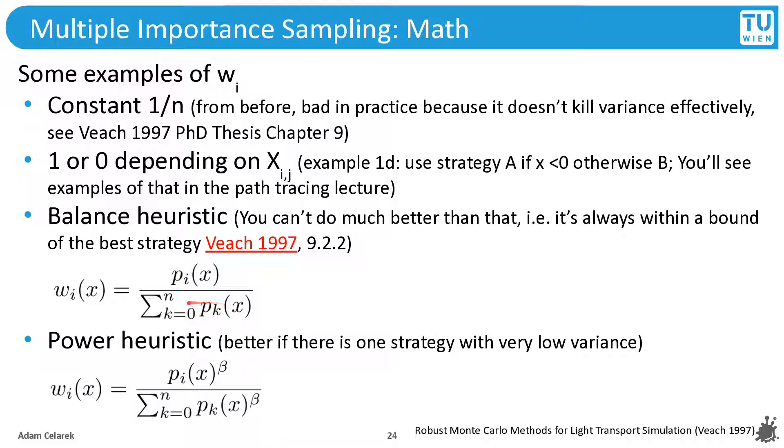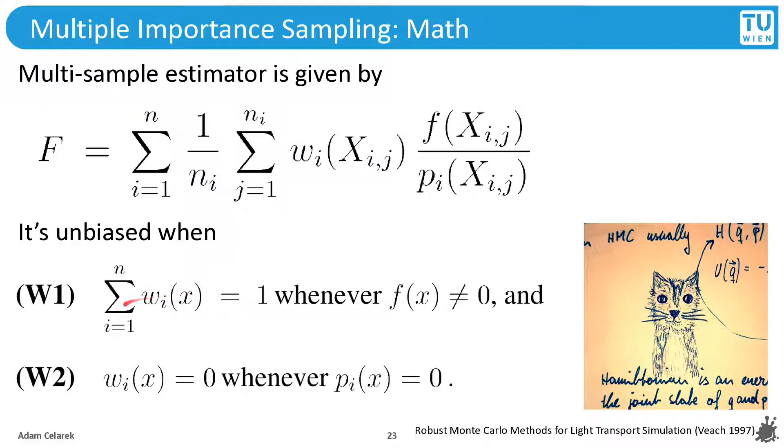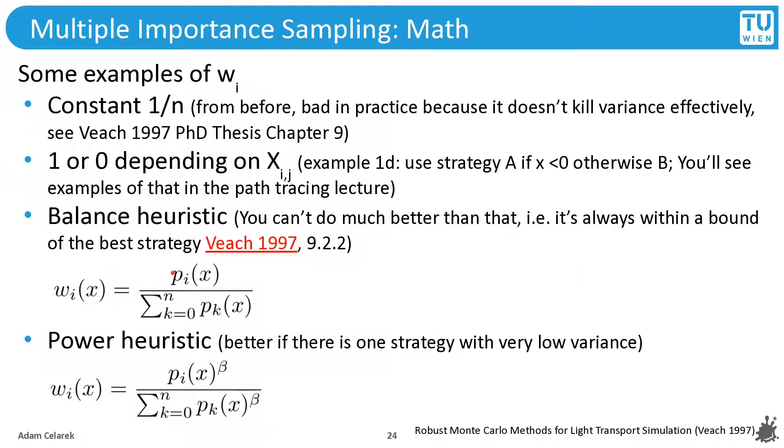Okay, so what we see here? We have the probability of the current strategy divided by the sum of the probabilities of producing the same sample of all the other strategies. So let's look at our conditions from before. It should sum up to 1. This is clearly the case, because when you sum up all the weights for the different strategies, you will have the same sum as you have on the bottom. You will also have here on the top. And so this will produce 1.